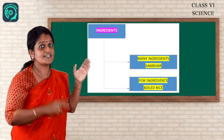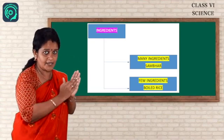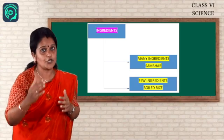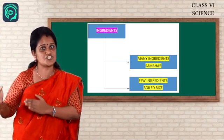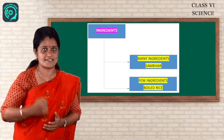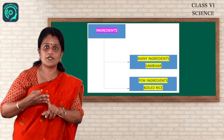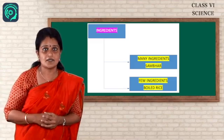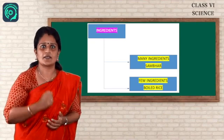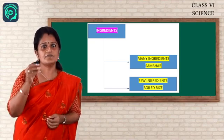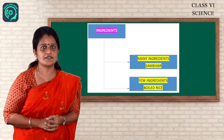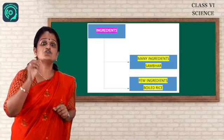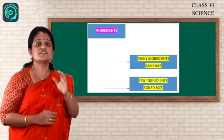So ingredients means it is of two types. We can make one item with few ingredients and the other food items with many ingredients. In sambar, vegetable curry, chicken curry, we are using so many types of ingredients. For example, salt, water, chili powder, coriander powder, tomato, so many types of vegetables. In chicken curry, we are using chicken. But what about boiled rice or just a salad? We are using few ingredients. So in this chapter, it is really specifying that the components or the materials which is used to prepare a food item or a food dish is called ingredients.